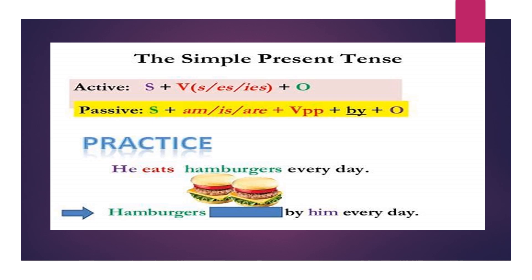For example: 'He eats hamburgers every day.' The object is 'hamburgers,' so I bring it to the beginning as my subject. 'Eats' is present simple, so I'll put am, is, or are. 'Hamburgers' takes 'are,' so I'll say: 'Hamburgers are eaten' — the past participle of 'eat' is 'eaten' — 'by him every day.'